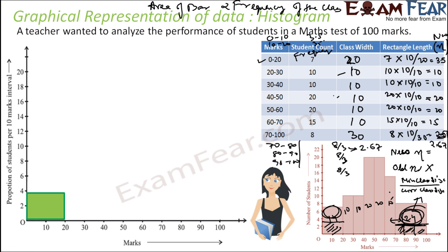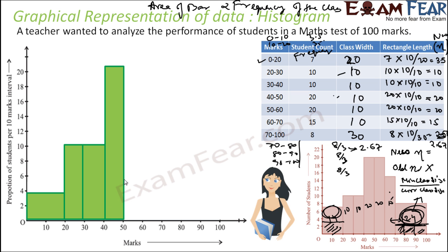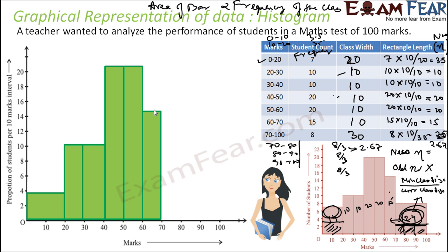With this corrected data, we can now plot the graph. For 0 to 20, the height is 3.5. For 20 to 30, height is 10. For 30 to 40, height is 10. For 40 to 50, height is 20. For 50 to 60, height is 20. For 60 to 70, height is 15. And for 70 to 100, the width is very large but the height is only 2.67. This is the correct histogram.